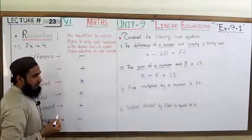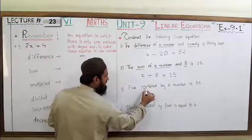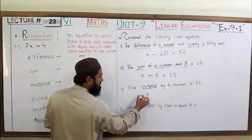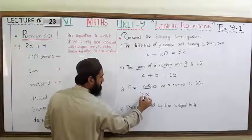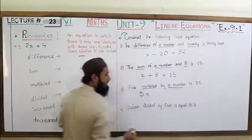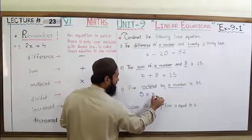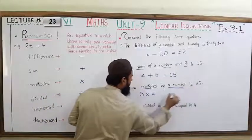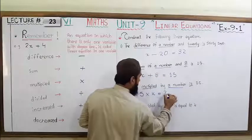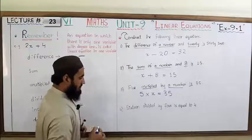Teesra statement: 'Five multiplied by a number is 35.' Multiplied — multiply ki sign ke liye use ho raha hai. Five ko as it is utar denge. 'By a number' — wo ek number kya hai? Wo unknown hai, humein maloom nahi, to isko hum X se show karenge. 'Is' — equal to ki sign ke liye use ho raha hai. 'And 35' — 35 ko same utar dena hai. To yeh linear equation construct ho gayi: 5X = 35.